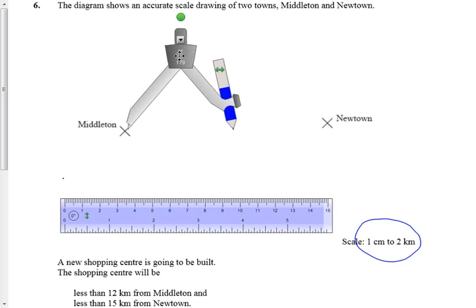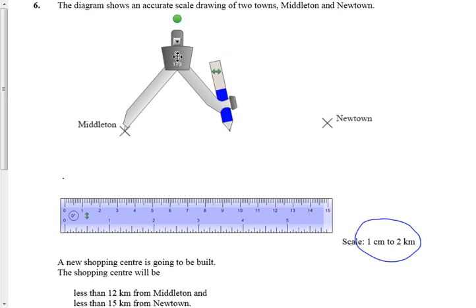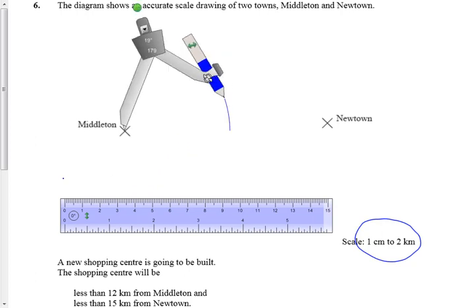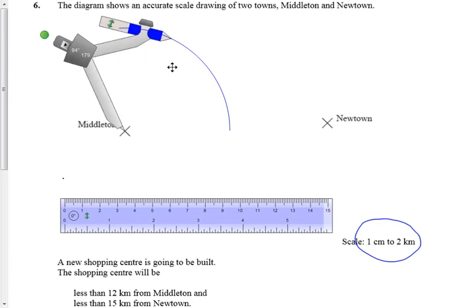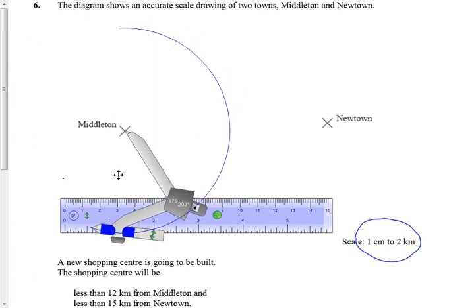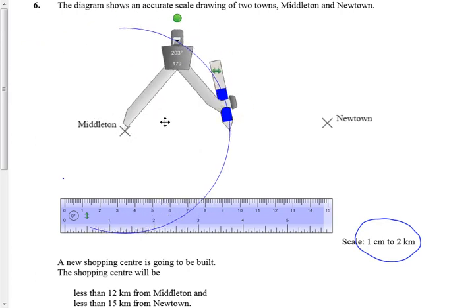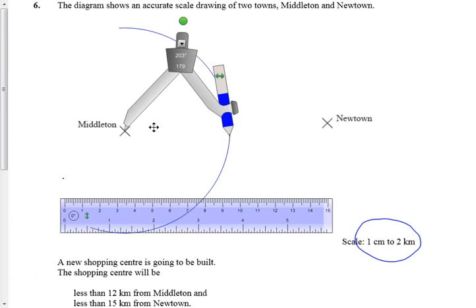Let's get this and stretch it out to six centimeters exactly. If I line up exactly with my compasses and draw a line around like that, that line represents the 12 kilometer boundary. So the shopping center's got to be inside, closer to Middleton than that line.